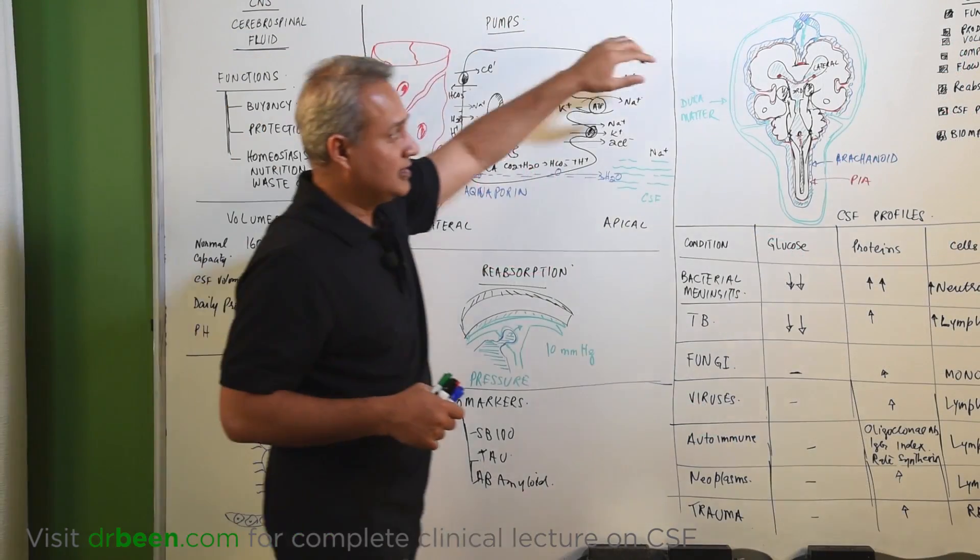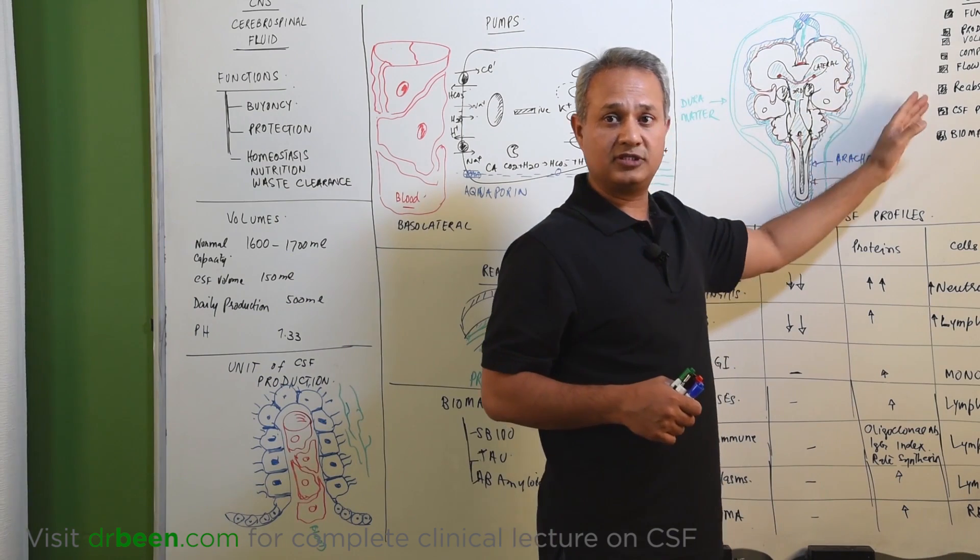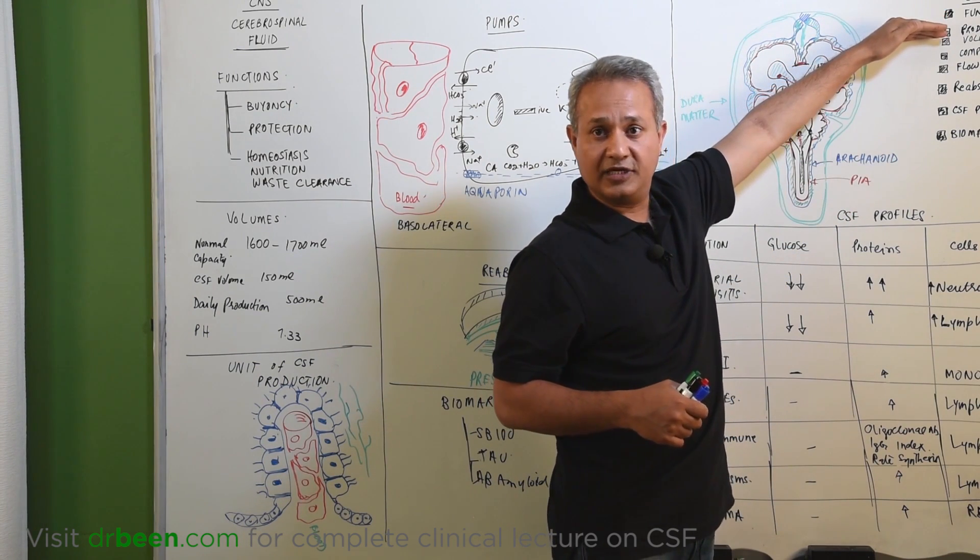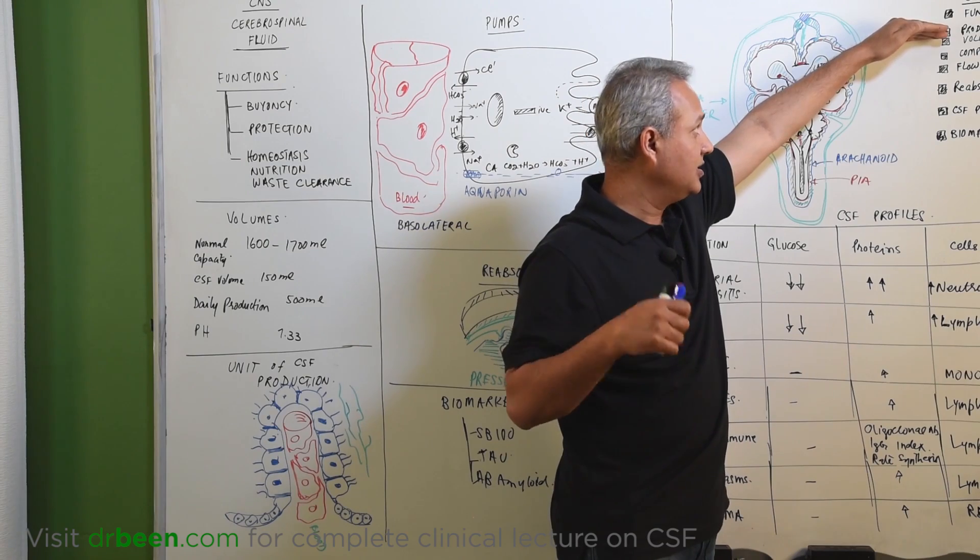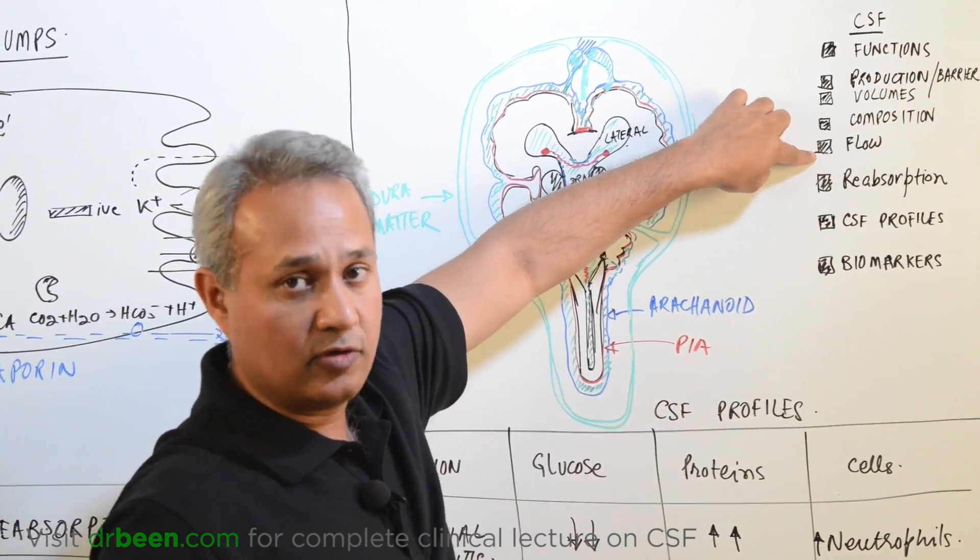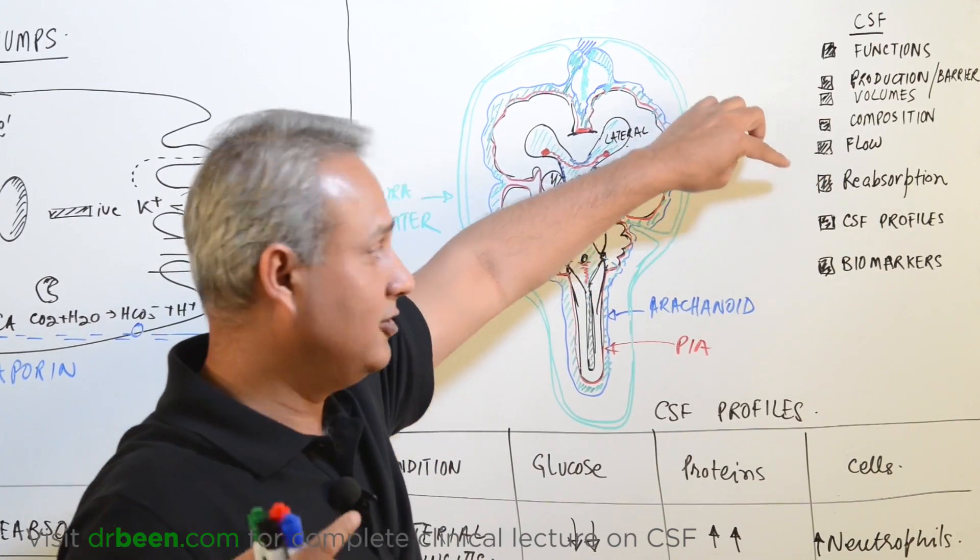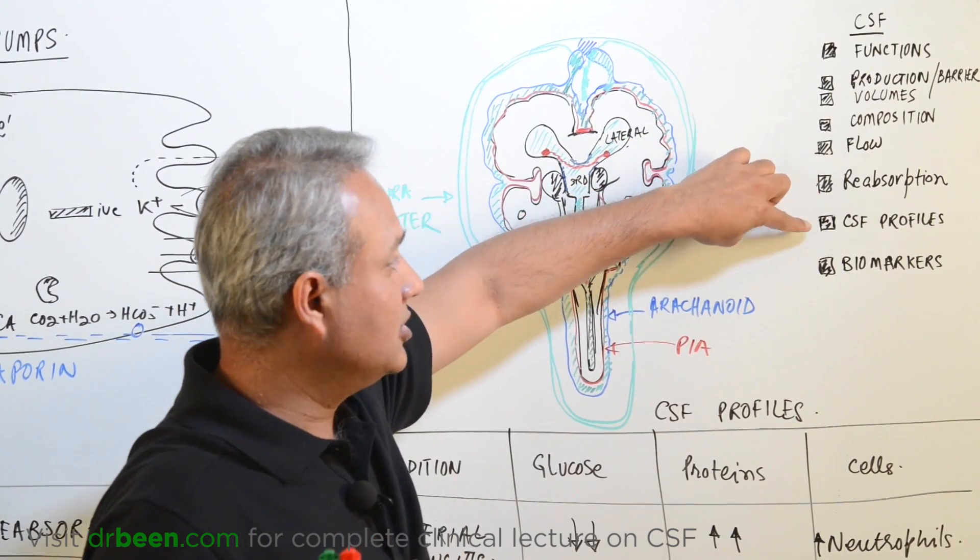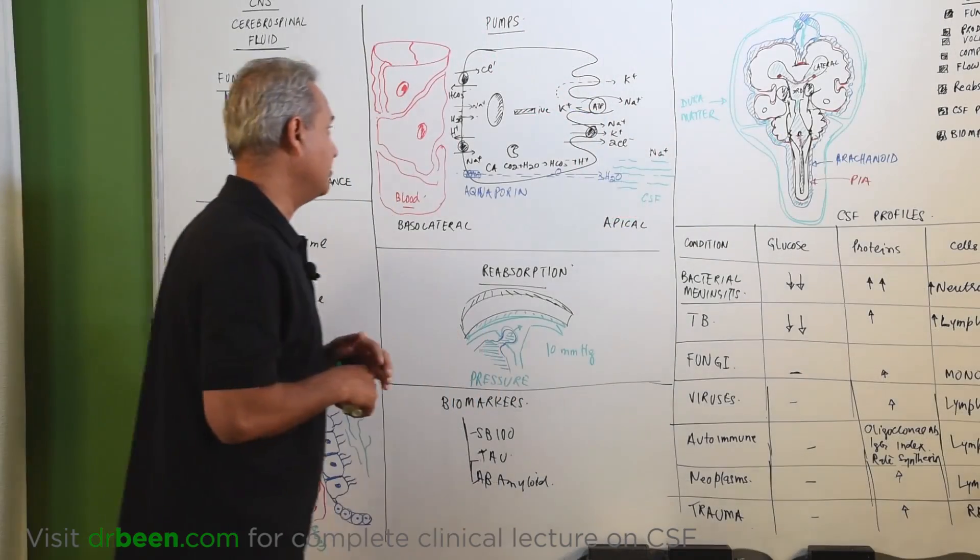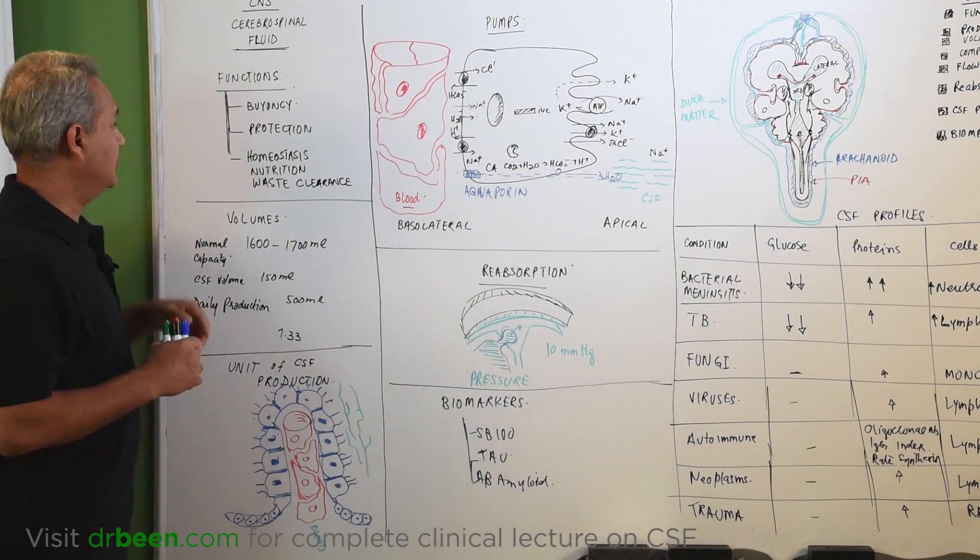CSF, if you see here, here is a list of things that we should know about the CSF. Functions of the CSF production, the CSF and brain blood barrier, volumes of CSF, composition of the CSF, flow of the CSF and the reason for the flow of the CSF, reabsorption, profiles, and biomarkers. So, let us very quickly get to them and get done with them.